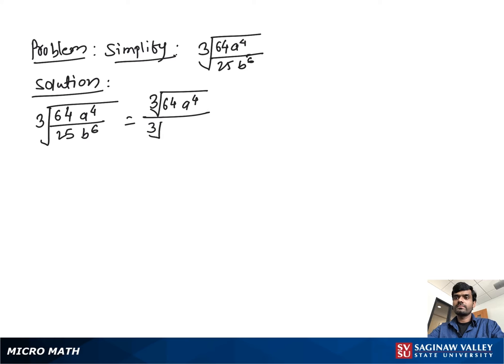Write cube root 64a⁴ over cube root 25b⁶. Again we write cube root 64 times cube root a³ times cube root a, which is a⁴, over cube root 25.